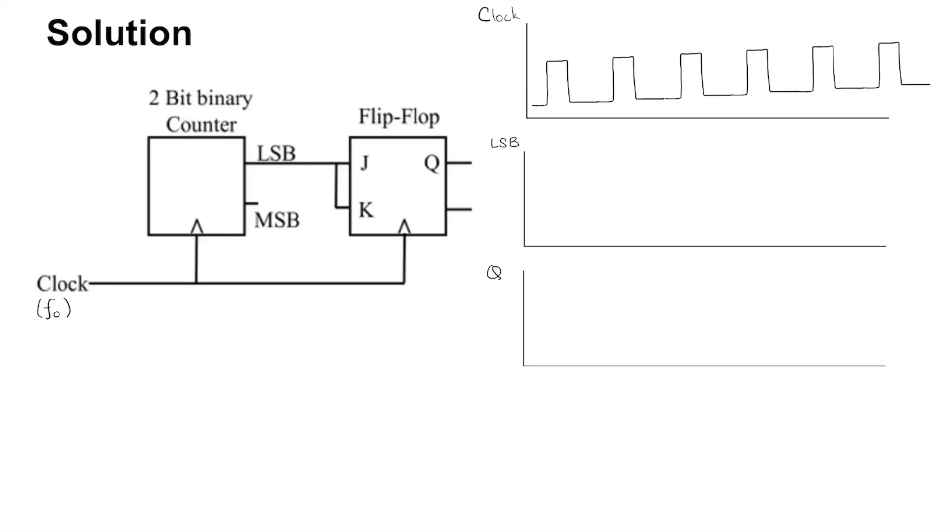Let's say that this is the clock waveform and that these are positive edge triggered flip-flops and counters. It doesn't matter—it will also work if you use negative edge trigger. So now we have the 2-bit counter.